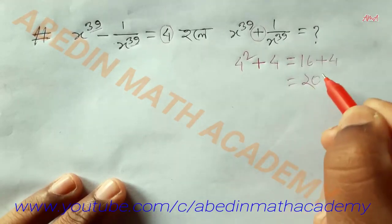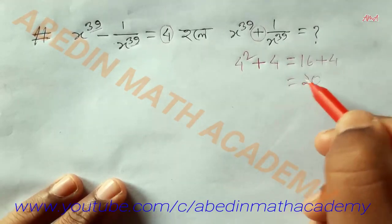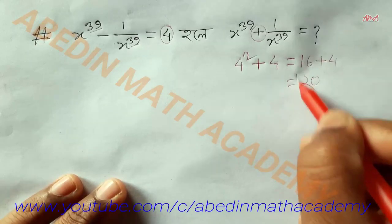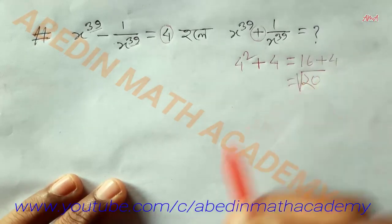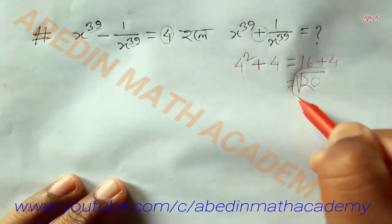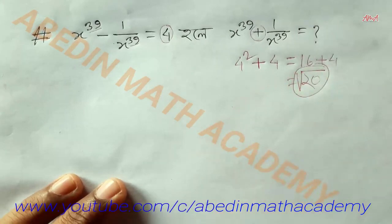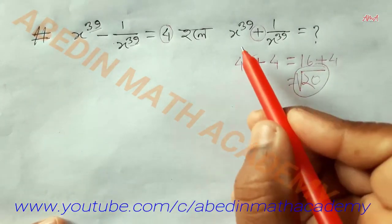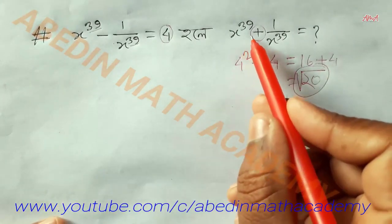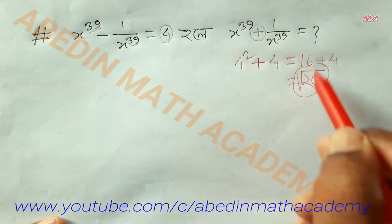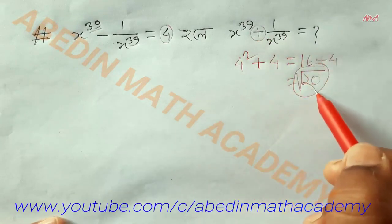This is the color of viewers. If we get the root color, it's the mother answer. I should go to the version — that will it. X to the power 39 plus 1 by x to the power 39 is equal to root.